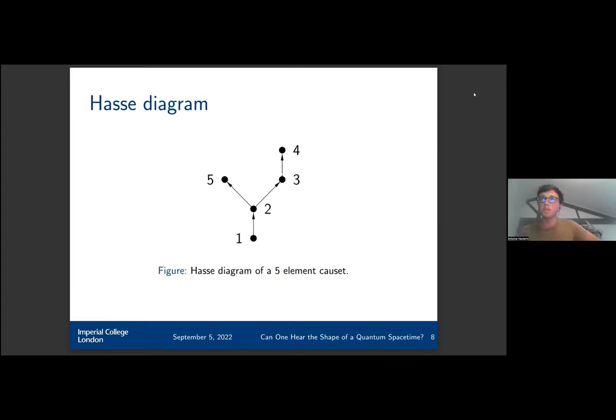A quick example: here's the Hasse diagram of a five element causal set. For instance, we can see that event one precedes event five, but for example event five and four are not causally related, so we cannot say if one precedes the other.